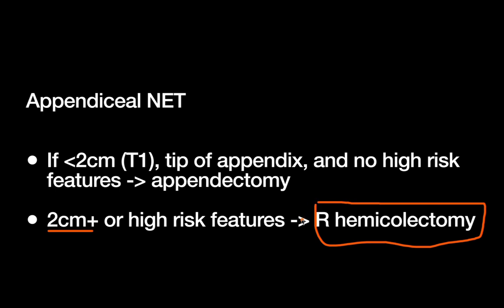I recommend always just looking at these features from the path report rather than memorizing them. General high-risk features include a positive margin, location at the base of the appendix where a positive margin is highly likely, deep invasion into the mesoappendix greater than three millimeters, any mixed histology, lymphovascular invasion, or relatively high-grade disease — grade two or higher. And if you're going to go back and do a hemicolectomy in these patients, you would want to do formal cancer staging as well to look for metastatic disease.